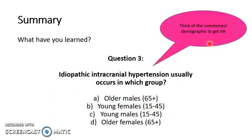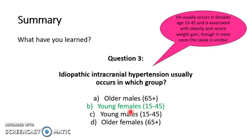Finally, Question 3: Idiopathic intracranial hypertension usually occurs in which group? Think of the commonest demographic to get IIH and the predisposing risk factors associated with it. The answer is B: young females aged between 15 to 45. It's associated with obesity and rapid weight gain, though in most cases the cause is unclear — we just know that this is a predisposition. Thank you for watching, and that concludes the hydrocephalus video.